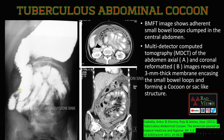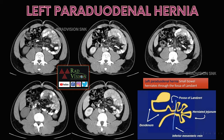On MDCT axial and coronal post-contrast images, there are multiple small bowel loops clustered and surrounded by a 3 mm thick enhancing membrane, with ascites. This was a case of tuberculous abdominal cocoon. Cocoon can also be seen in tubercular abdomen, especially the wet type of tuberculosis.